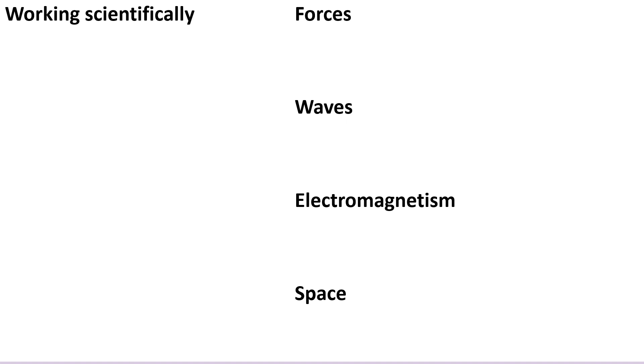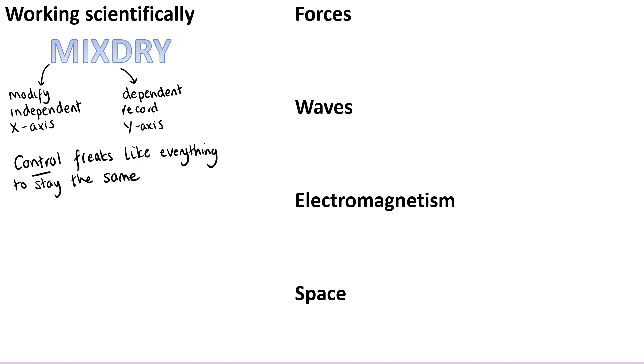Working scientifically skills are always a good place to start, because they're very likely to come up across all six papers. So the first thing would be, what are the variables for an investigation? So I like to remember MIXDRY, and this stands for we modify the independent variable, which goes on the x-axis if we were to draw a graph, and then the dependent variable is the one that we record, and it goes on the y-axis. Then our control variables are the things that we keep the same and forced to stay the same and will not allow to change. So I always remind classes that I am a control freak, I always like to have my same seating plan, I always like to have the same lilac coloured PowerPoint, and that's how I remember it.